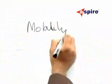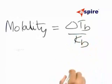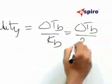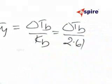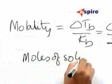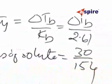So we will first calculate the molality that is delta Tb divided by Kb or that is equal to delta Tb divided by 2.61 as given in the problem. Now moles of solute is equal to 30 divided by 154.